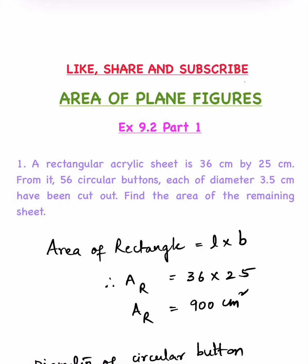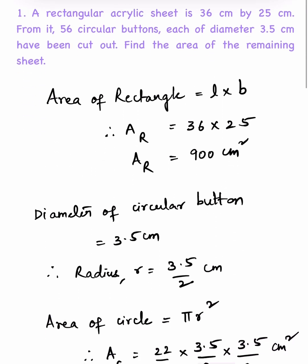Area of plane figures, Exercise 9.2 Part 1. A rectangular acrylic sheet is 36 cm by 25 cm. From it, 56 circular buttons, each of diameter 3.5 cm, have been cut out. Find the area of the remaining sheet. Area of rectangle equals length into breadth.